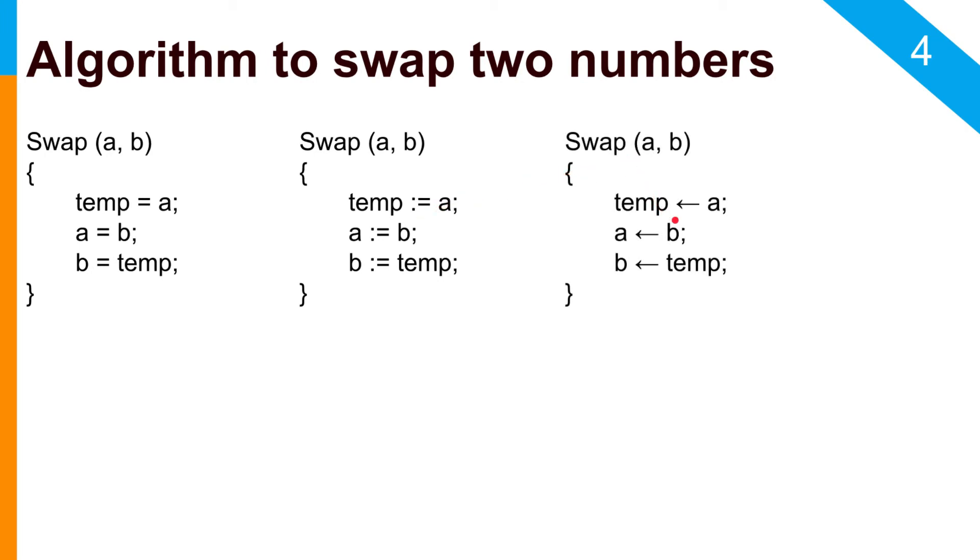You can also use this arrow to signify that your A is assigned to temp, then your B is assigned to A, and finally your temp is assigned to B. And finally you have your swap which is now done using this algorithm.